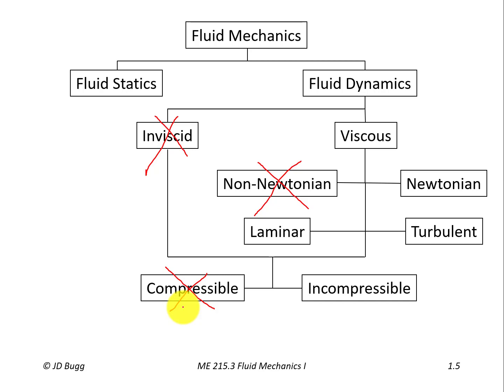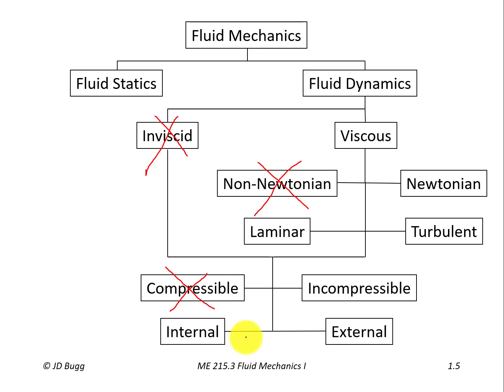The last classification is internal versus external flows, which refers to where the solid boundary is. An internal flow example is pipe flow, where the boundaries completely enclose the fluid — such as flow inside a pump or heat exchanger. An external flow example is flow over an airplane wing, where we're interested in the flow outside the solid object. We'll look at both types, primarily internal flows but also a number of external flow examples.